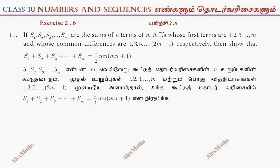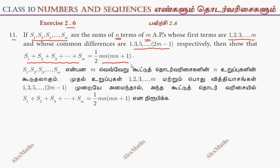Hi students, this is Alex here. Exercise 2.6, question number 11. If s1, s2, s3...sm are the sums of n terms of m APs whose first terms are 1, 2, 3...m and common differences are 1, 3, 5...2m-1. We need to show that the sum s1+s2+...+sm equals half times mn times (mn plus 1). That means, proof.